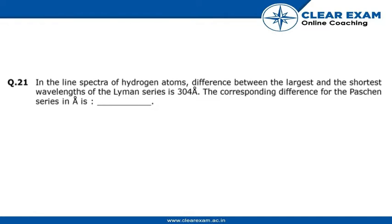The question states that in the line spectra of the hydrogen atom, difference between the largest and the shortest wavelength of the Lyman series is 304 Armstrong. The corresponding difference for the Paschen series in Armstrong is.